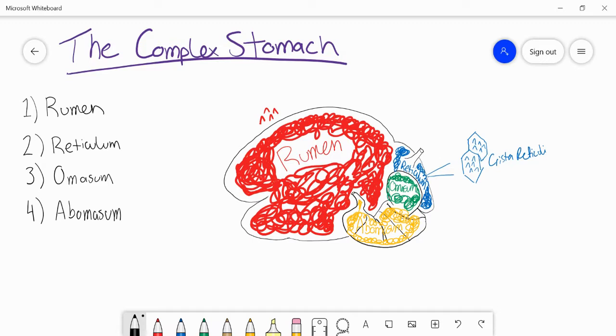But the length or the amount of space that these compartments are taking up might be a little bit different compared to the stomach of the carnivore. So this is, in general, basically the layout that we have for the complex stomach of ruminants.